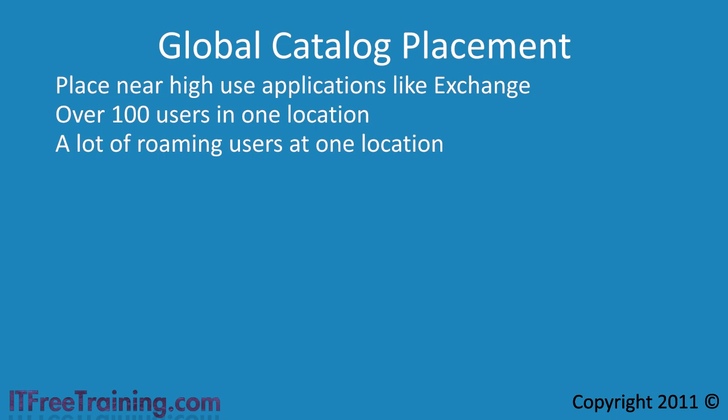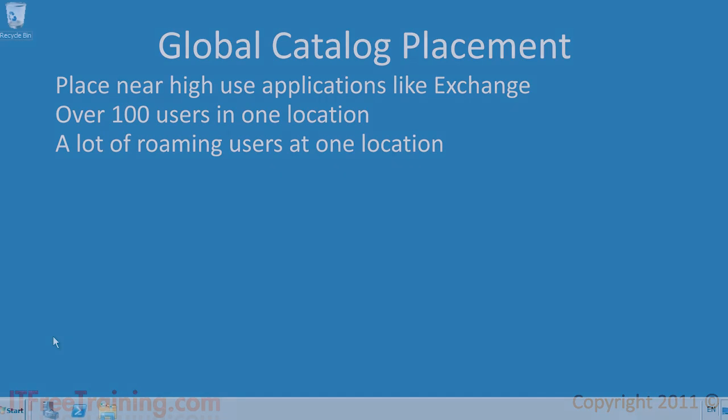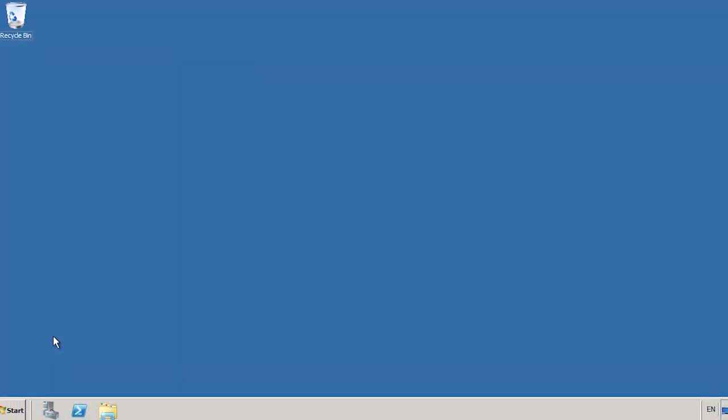Covered in a later video, I look at a feature called universal group caching, which allows previous universal group lookups to be cached on a domain controller to improve later performance. Now that you understand about global catalog placement, let's go to a Windows Server 2008 domain controller and look at how to make it or stop it from being a global catalog server.